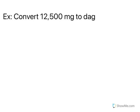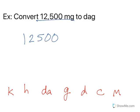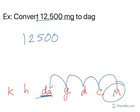Convert 12,500 milligrams to decagrams. Okay, so we're talking about grams. So decicentimila, and then decahecto, kilo. Okay, so what are we starting with? 12,500 milligrams. We're going to decagrams. So 1, 2, 3, 4.